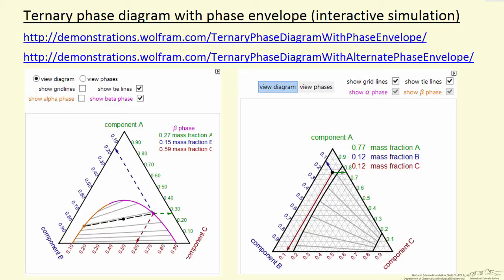These are ternary phase diagrams of three components in equilibrium. In this case, what we're looking at are systems where there are regions of partial miscibility. So we get phase separation. We have two phases. Each phase contains all three components. We have two phases in equilibrium with each other over a certain region of the phase space.